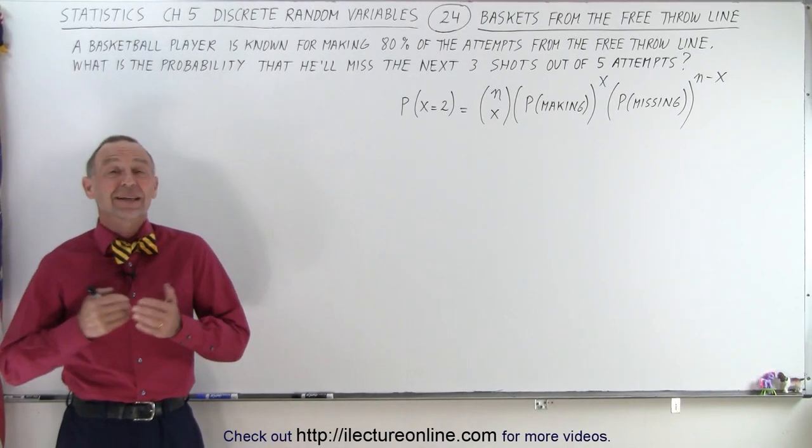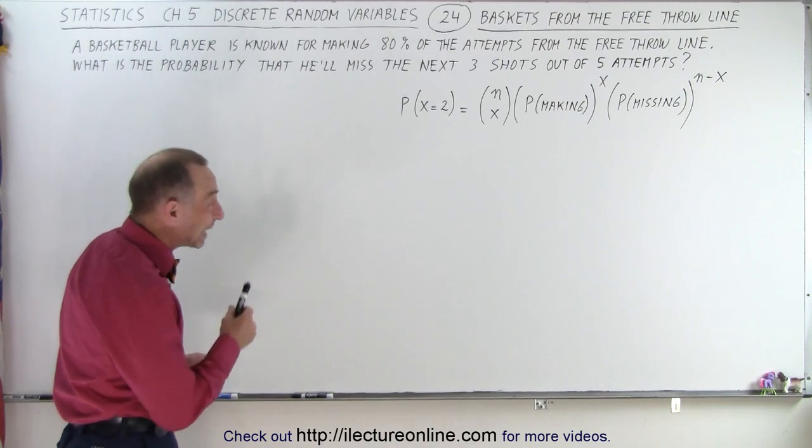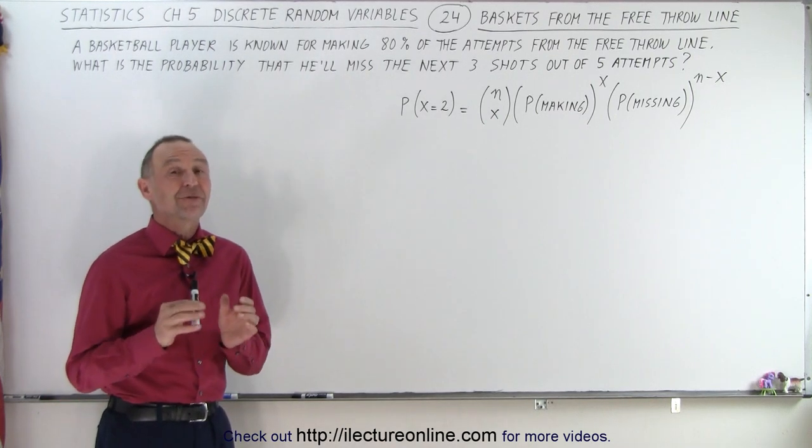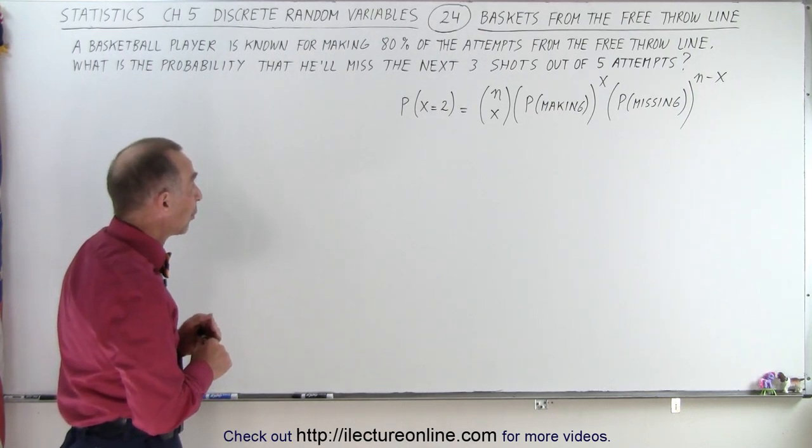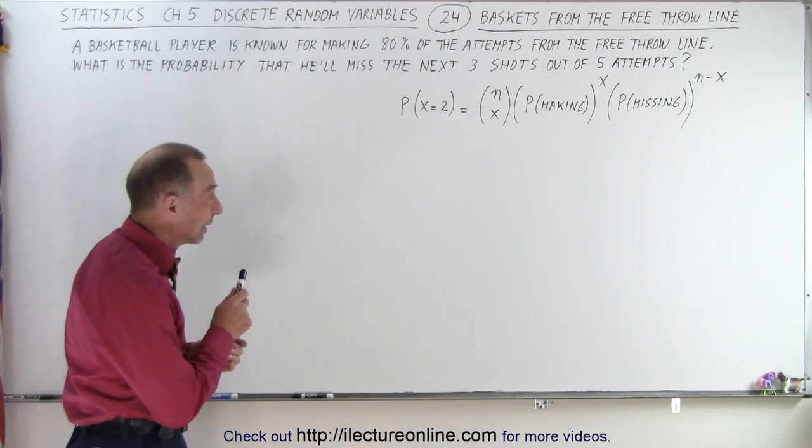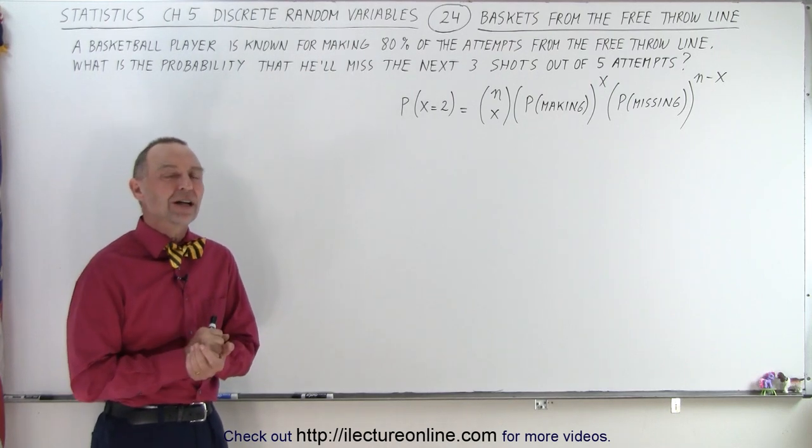Welcome to iLecturOnline. Our next example involves a basketball player. He's known for making 80% of his shots from the free throw line. That's pretty good. Now, what will be the probability that over the next five attempts he will miss three of the five shots?